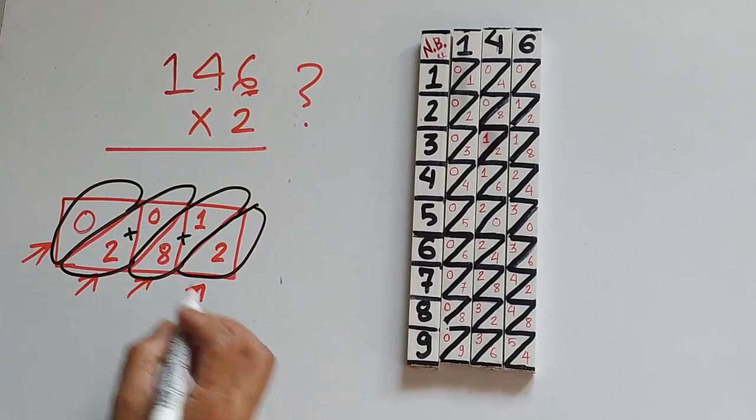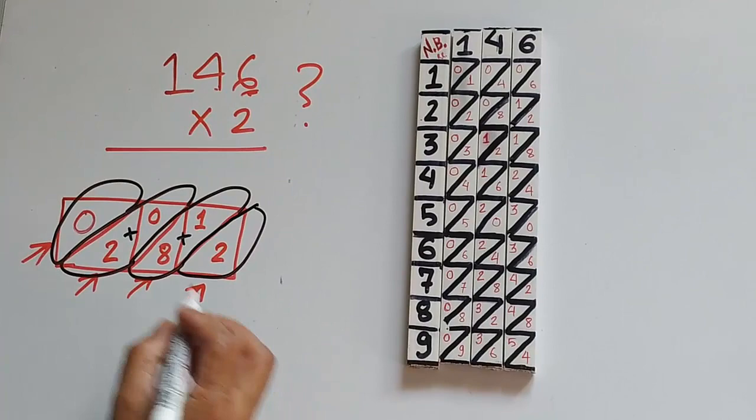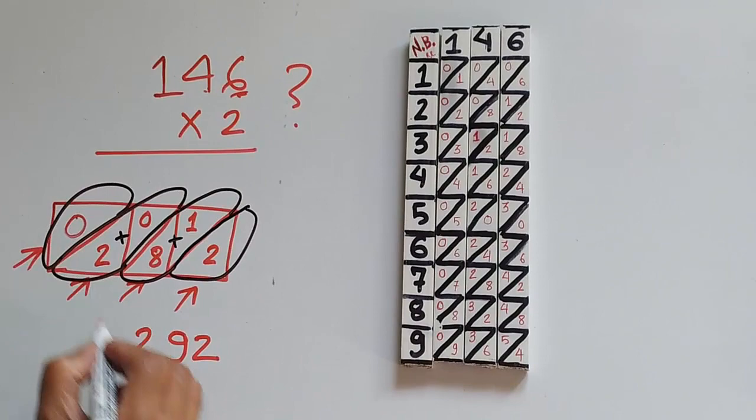So we take the number 2, and 8 plus 1 which is 9, 2 plus 0 which is 2, and 0. We don't need to write 0. And the answer is 292.